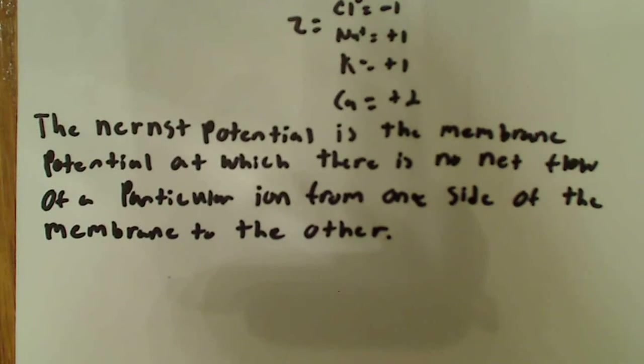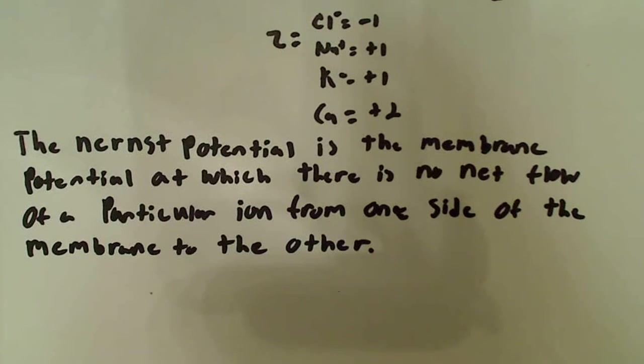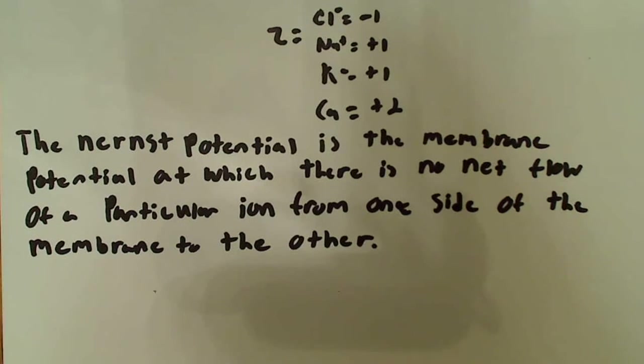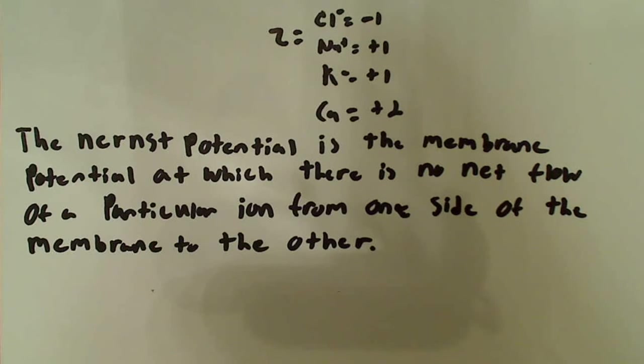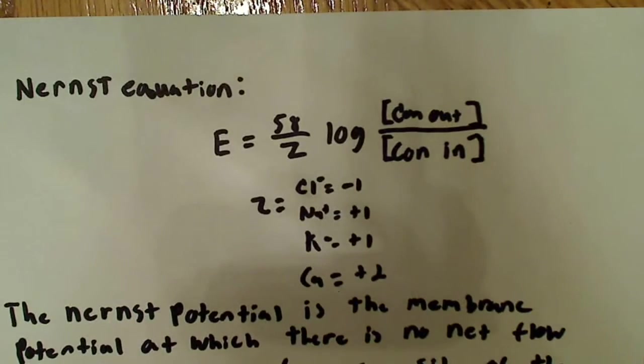And maybe I didn't clearly define what the Nernst potential actually is. So, here's a definition of it. The Nernst potential is the membrane potential at which there is no net flow of a particular ion from one side of the membrane to the other. So, there's no net movement at this point. That's why it's called equilibrium, or the equilibrium potential.